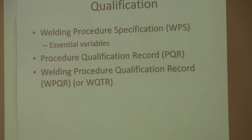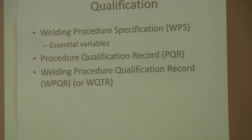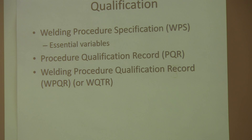There's something called essential variables, which if you look in the code, depending on the process that you're using, there are different essential variables. If you're using gas metal arc welding, you look in the code and it says these are the things that have to be in your weld procedure. And if you change those, or if they're not in your weld procedure, then your weld procedure becomes invalid. You have to re-qualify it.